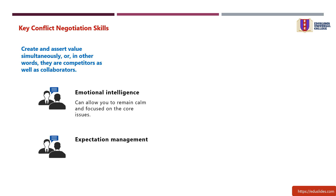Skill two: expectation management. Just as you should enter a conflict negotiation with a clear goal, the other party also likely has its own defined expectations. If you believe you might not be able to agree to each other's terms, you could try adjusting your own expectations. Skilled expectation management involves maintaining a balance between being a firm negotiator and a collaborative one.